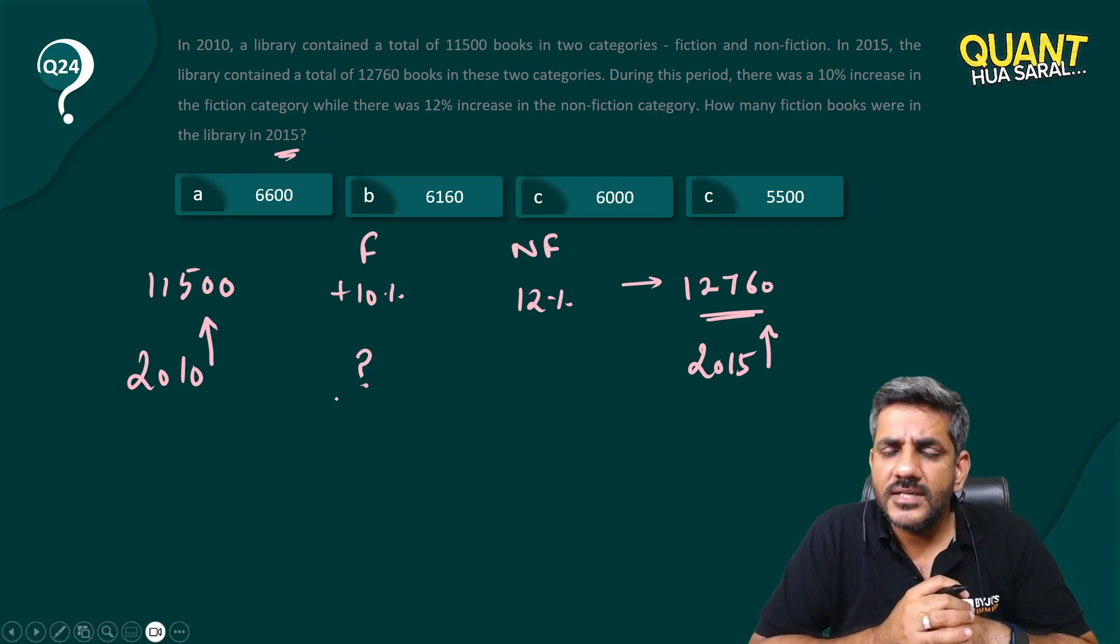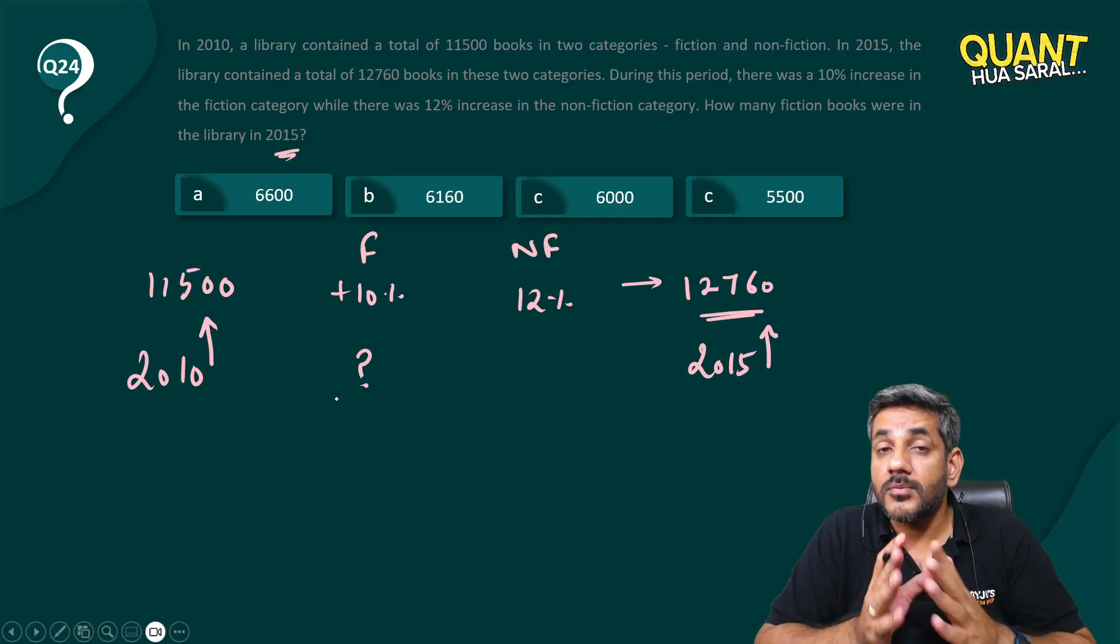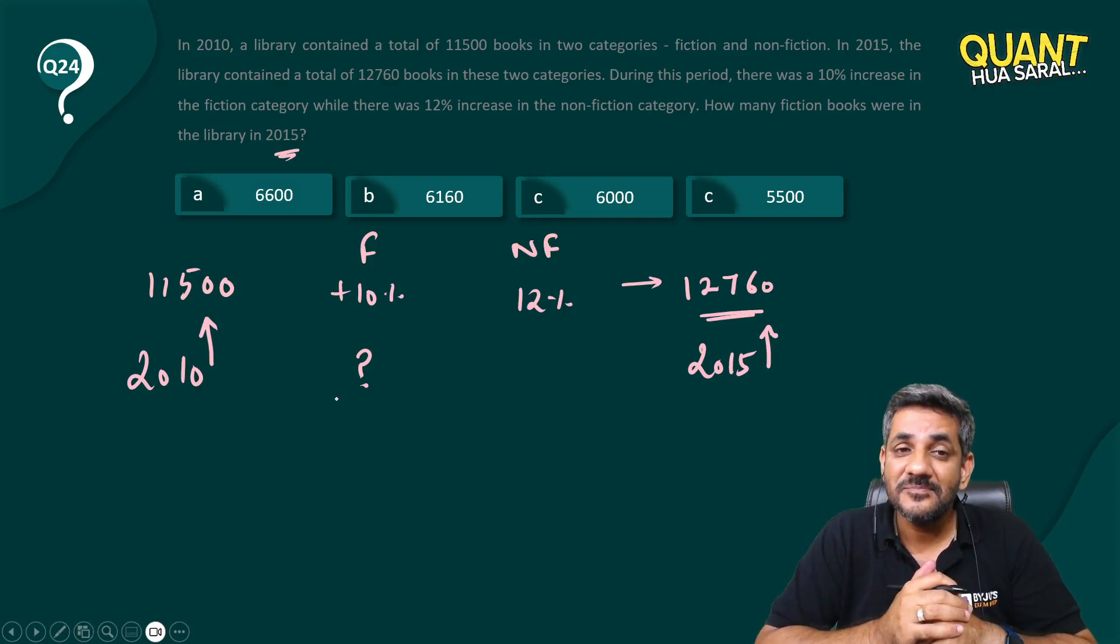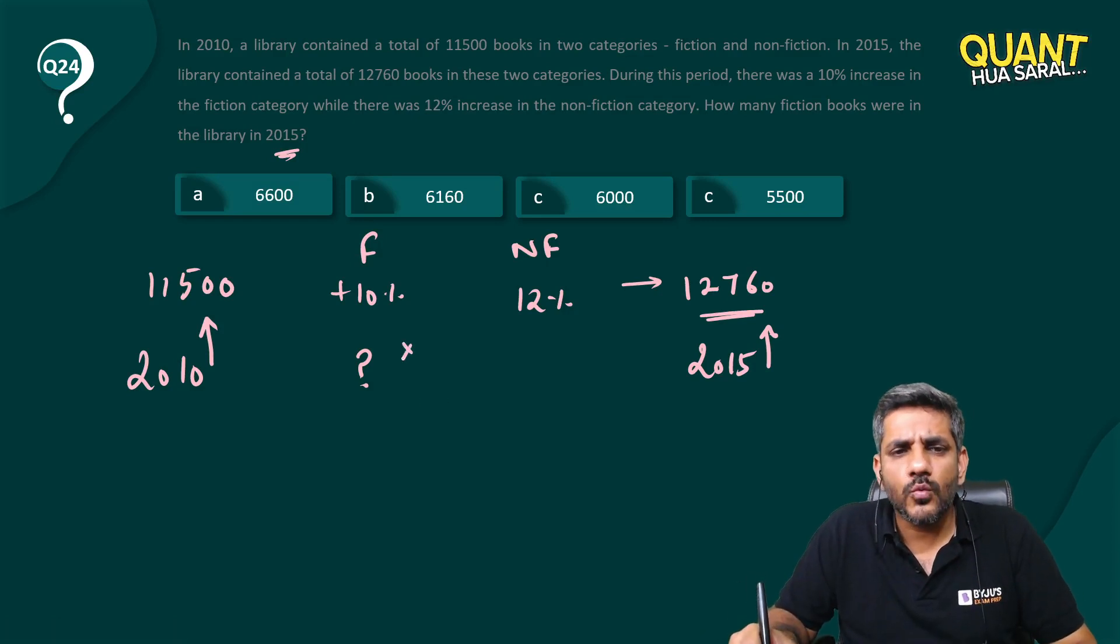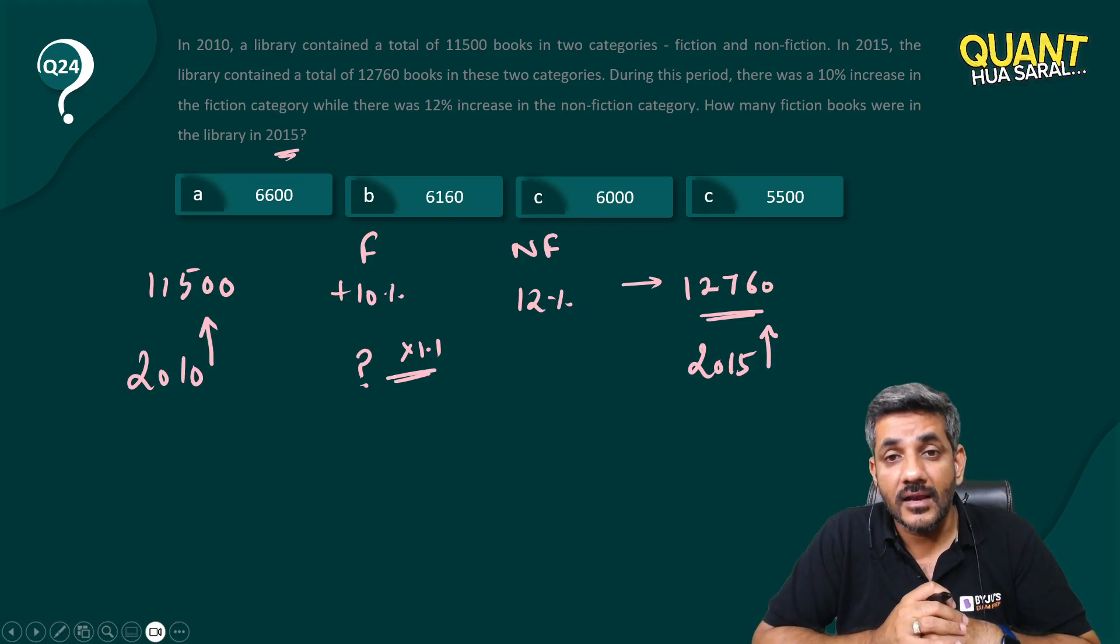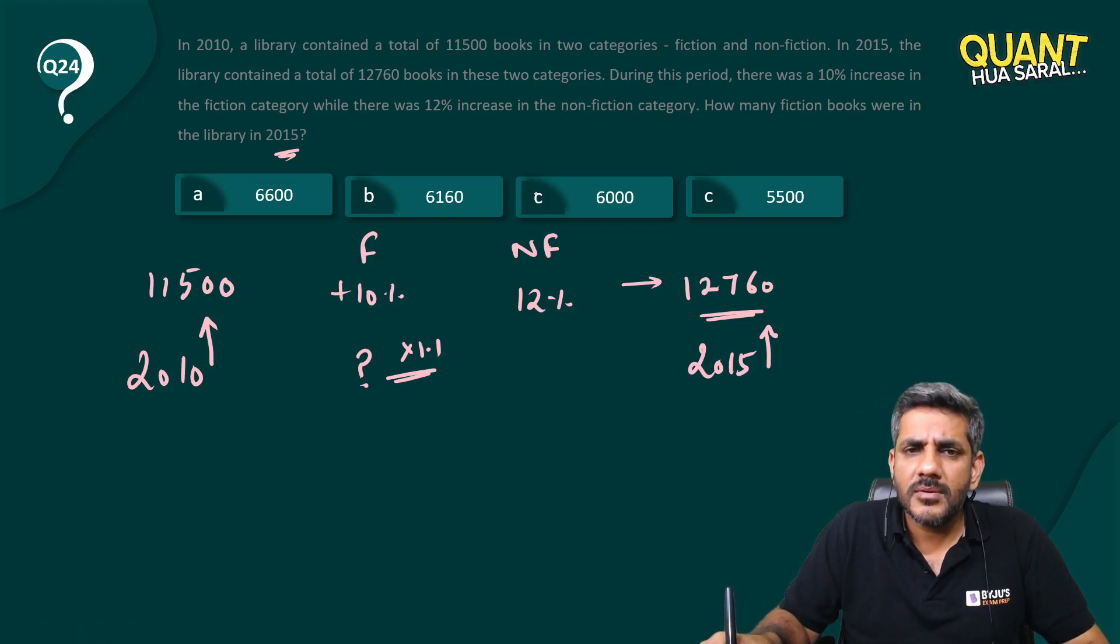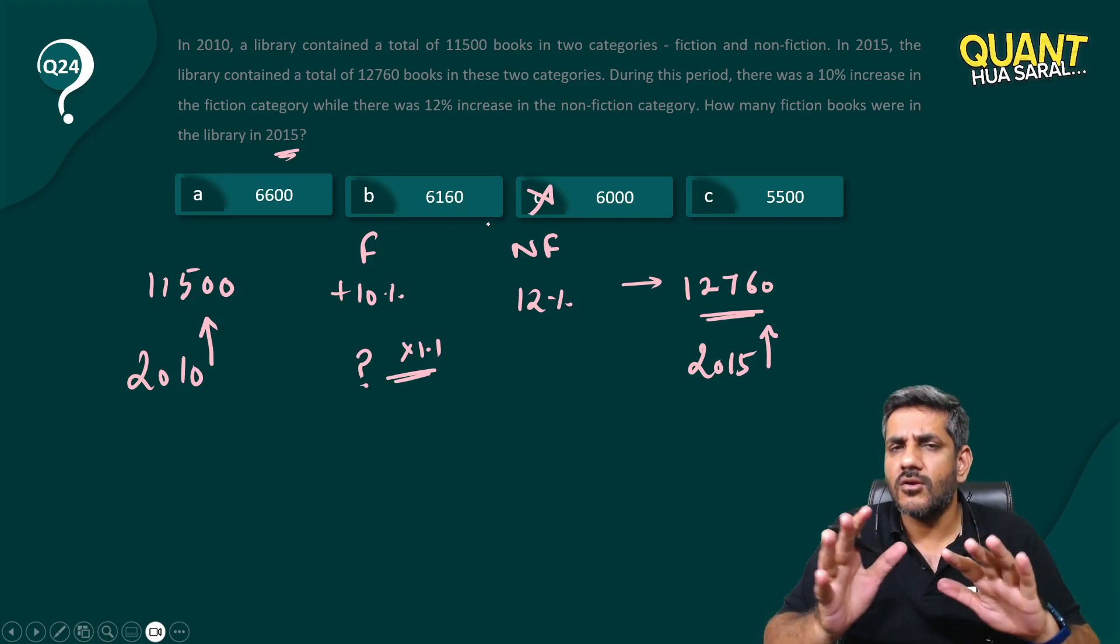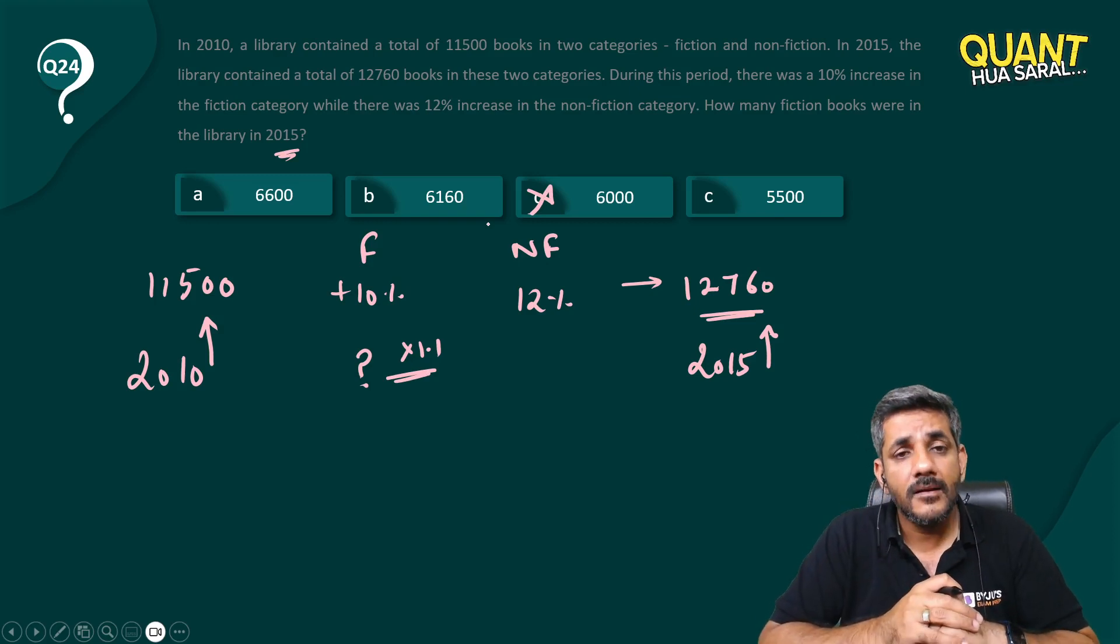When I am doing this question, the first thing that comes to my mind, and probably now it will be coming to your mind as well, if you have been following me in this series. When anything increases by 10%, it becomes 1.1 times. That means it's a multiple of 11. So by that logic, I can probably rule this out. This is not a multiple of 11. So 6,000 probably cannot be the answer. What about others?